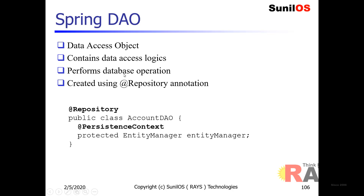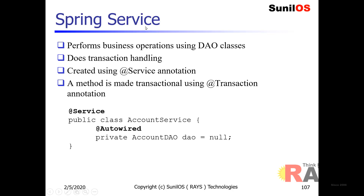Spring Boot is providing DAO classes — DAO stands for Data Access Object. Those are used to manipulate the database, to perform add, update, delete operations. You can make a class a DAO using the @Repository annotation. When you configure Hibernate and JPA, Spring Boot internally creates an entity manager that can be injected in the DAO class. Entity manager is used to get session connections to manipulate your database.